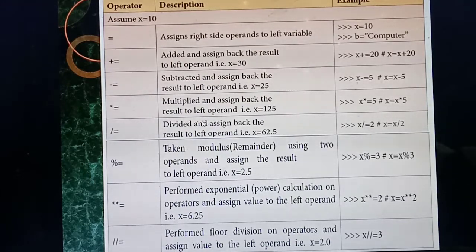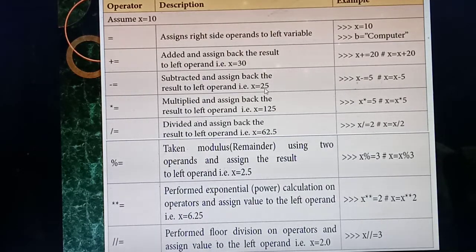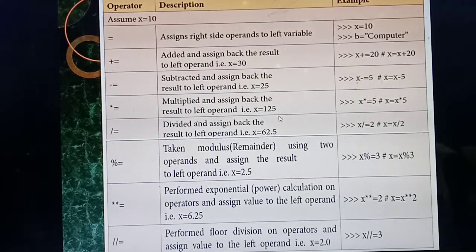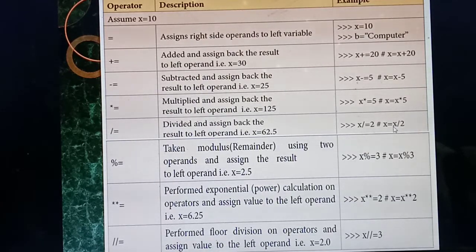Star-equal-to: x star-equal-to 5 means x equal to x star 5. The last value of x is 25, so 25 multiplied by 5 gives 125. The current value of x is now 125. Slash-equal-to: x slash-equal-to 2 means x equal to x divided by 2. The last value of x is 125, so 125 divided by 2 gives 62.5. The current value of x is now 62.5.